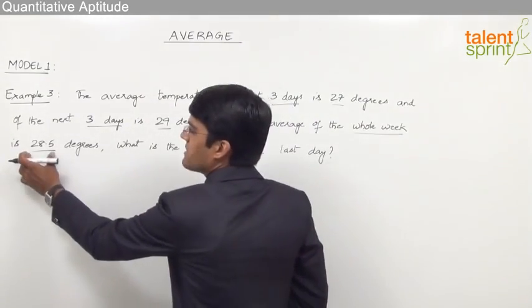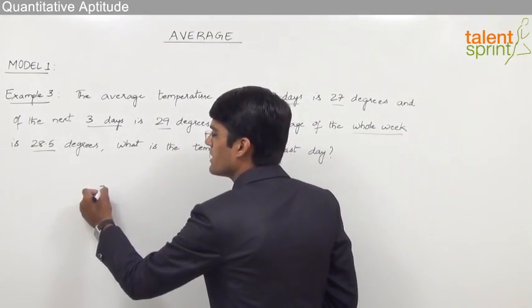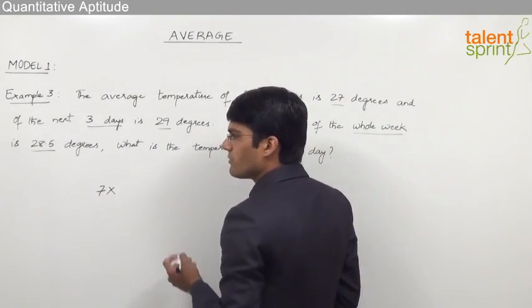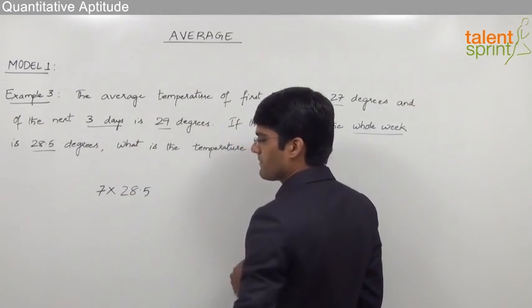Now as we know that the average temperature of the whole week is 28.5, we can say that the total temperature of all the days in the week should be 7 into 28.5.